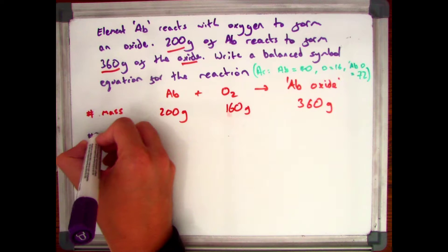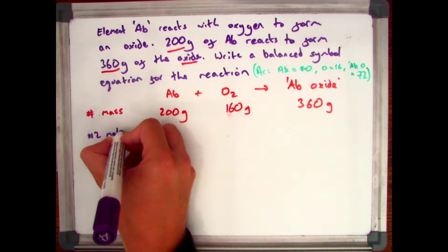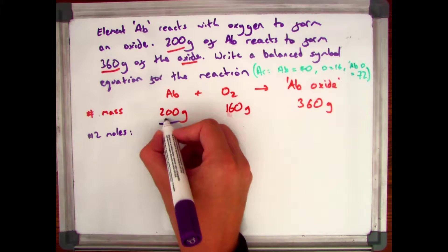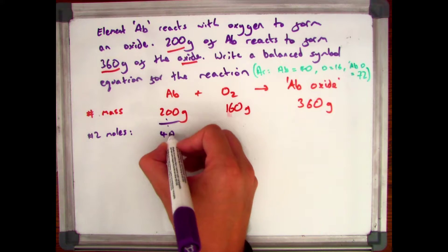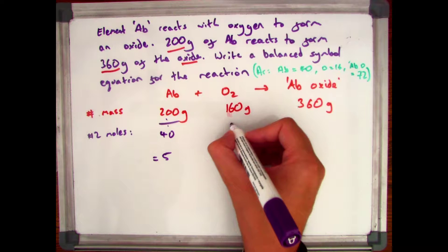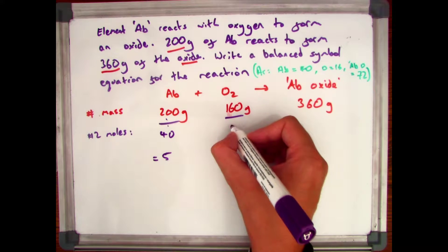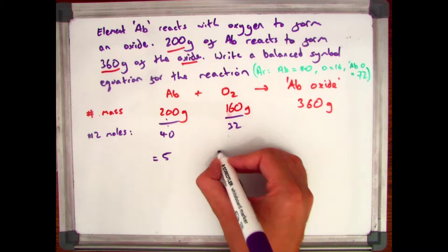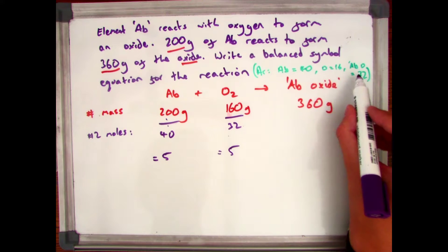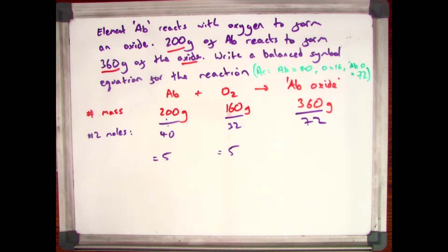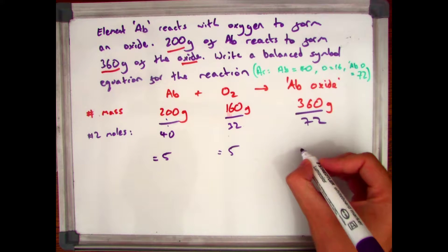I've been given the atomic and molecular masses in the top right hand corner in green, so I can work out the moles, which is mass divided by MR. AB is 200 divided by 40, which gives me 5 moles. Oxygen is 160 divided by 32, which gives me 5. And then my AB oxide — molecular mass of 72 — so 360 divided by 72, which also gives me 5.